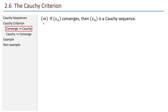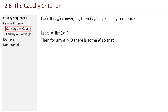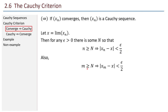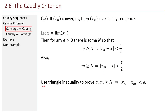Let's prove this. In the forward direction, I want to prove that if a sequence converges, then it is a Cauchy sequence. Let x be the limit of the sequence. By definition, for any epsilon greater than zero, there's some index N so that if n is greater than or equal to N, then x sub n is within epsilon over 2 of x. Similarly, if m is greater than or equal to N, then x sub m is also within epsilon over 2 of x. We can then use the triangle inequality to show that if n and m are both greater than N, then the difference between x sub n and x sub m is less than epsilon. That will be part of your homework.